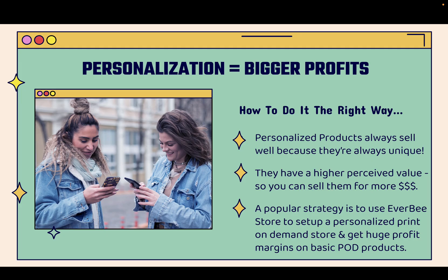There's no doubt that personalization is going to offer bigger profits. Personalized products — like someone uploading their name to a shirt, uploading a photo, or choosing specific options like what type of dog they have, the dog's name, where they live, their last name, or what year they were born — always sell well because they're always going to be unique. A personalized product is something the customer literally designs themselves, and the sky's the limit with your creativity.